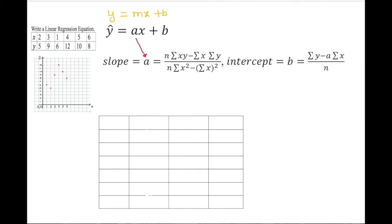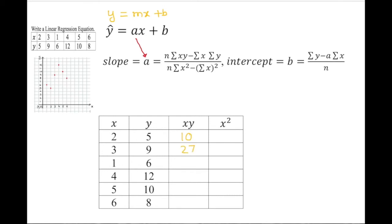The first column is x, the second is y, the third is x times y (we just multiply), and the fourth is x-squared. I'll put all the x-values down, all the y-values, then multiply to get xy. So: 5×2=10, 3×9=27, 6×1=6, 4×12=48, 5×10=50, 6×8=48.